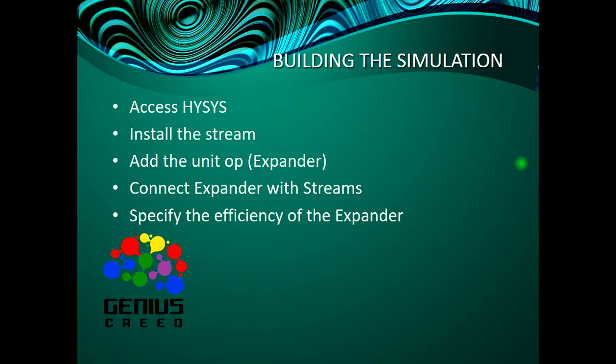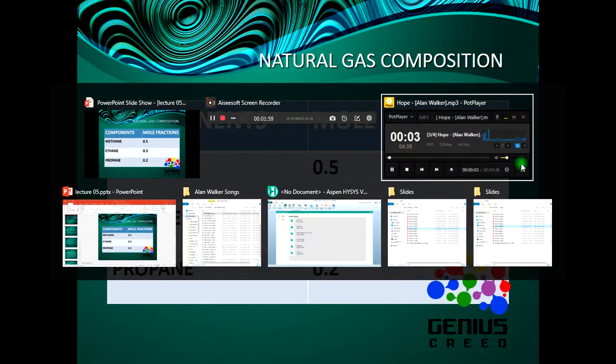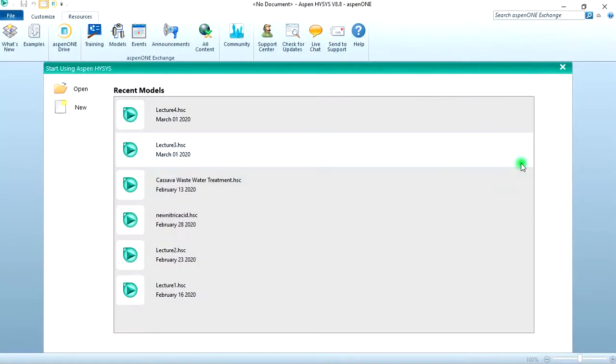We also specify the efficiency of the expander. The natural gas composition is: methane with a mole fraction of 0.5, ethane with 0.3, and propane with 0.2. Now let's move to HYSIS.